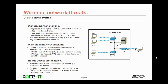Then there's WEP cracking or WPA cracking. This is using a packet sniffer to capture the password and/or the pre-shared key on a wireless network. Wired Equivalent Privacy, or WEP, can be cracked in minutes. Wi-Fi Protected Access, or WPA, cracking will take hours, but it can still be cracked. Neither of these encryption standards should be used on your wireless networks.